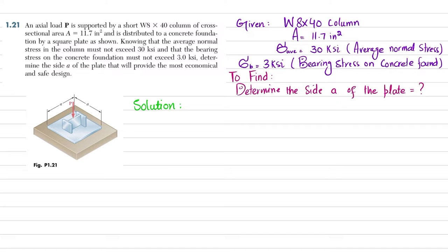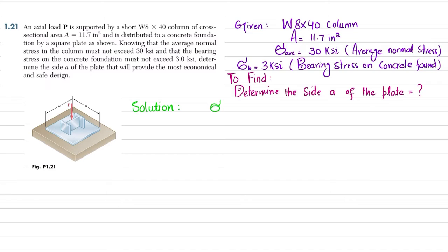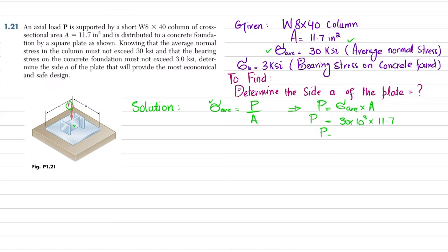First, average normal stress equals load per unit area. Since load P is not given but average normal stress is, we find P = average normal stress × area. So P = 30 × 10³ × 11.7, which equals 351 kips.